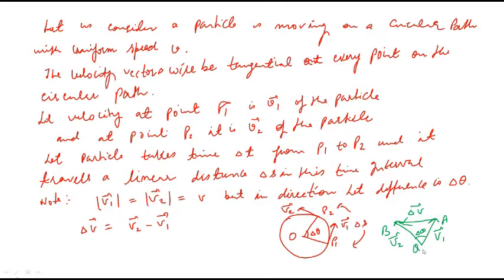So we can say that QA is equal to QB. When we find the change in velocity of the particle, we can find delta v as vector v2 minus vector v1. The arrow is towards the QB side, so delta v equals vector v2 minus vector v1.